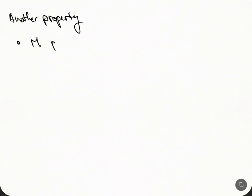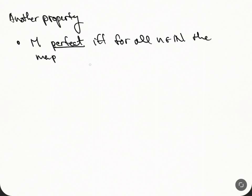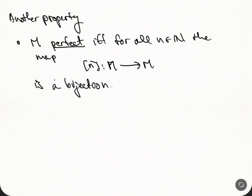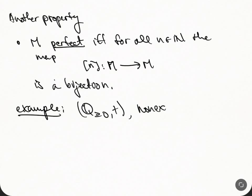Another property: M is called perfect if for all natural numbers N, the map from M to M given by multiplication by N is a bijection. An example is the rational numbers under addition. A non-example is the natural numbers, because multiplication by N is not surjective in that case.